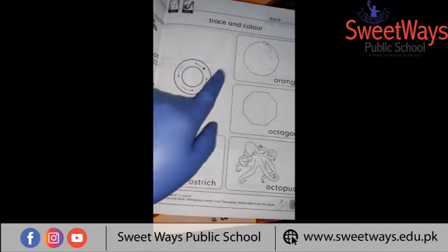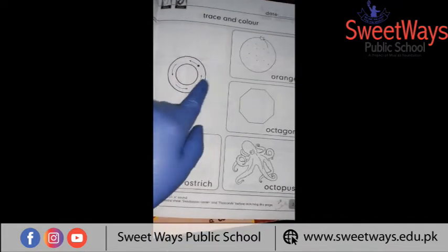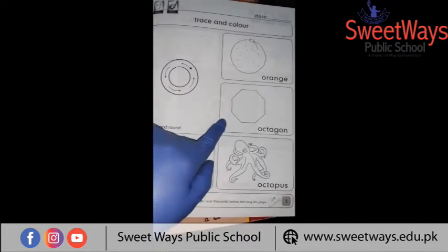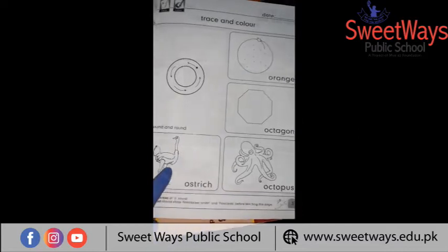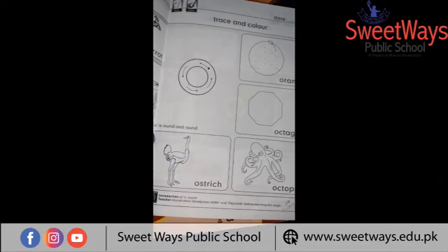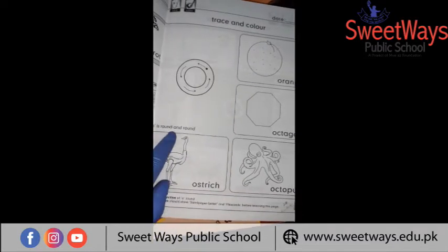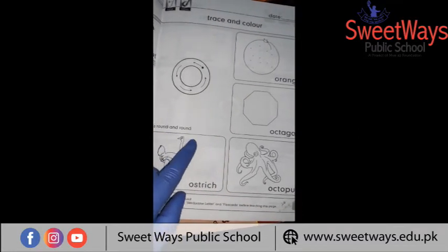O - orange. O - octagon. O - octopus. O - ostrich. O is round and round.